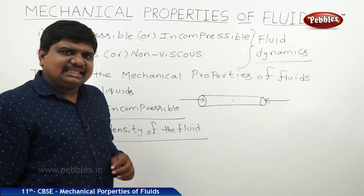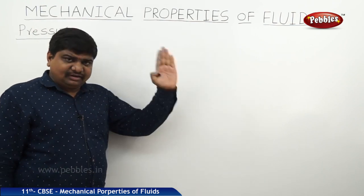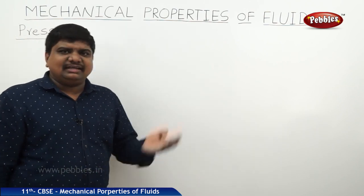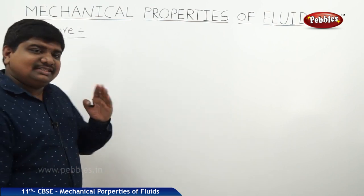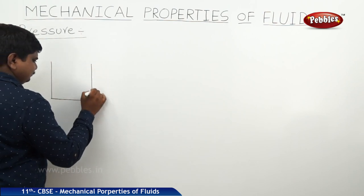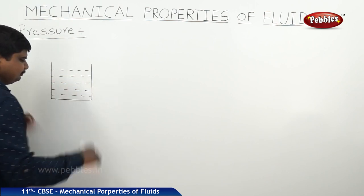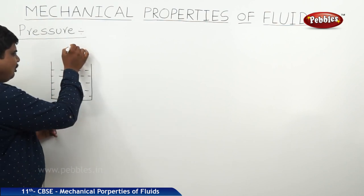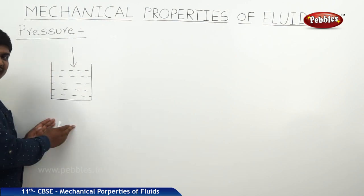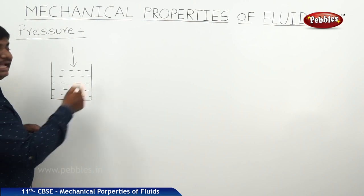Now we will discuss the physical quantities related to describing fluids. The first physical quantity used to describe the nature of a fluid is its pressure. How can you define pressure in the case of fluids? In the case of solids or any other bulk materials, we can easily explain pressure, but in the case of fluids we need a separate explanation. Take a container filled with a liquid, maybe water. All ends are closed, only the top end is open — this top end is exposed to the atmosphere.